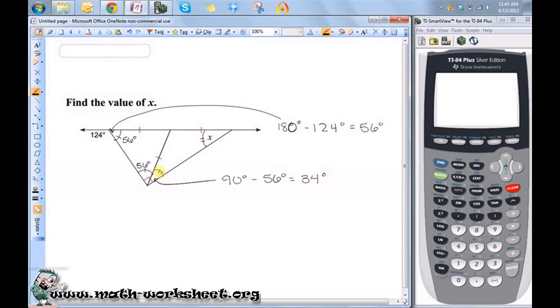Well, we said that this angle and this angle are equal in measure, because this is an isosceles triangle. If this one's equal to 34 degrees, then this one has to equal 34 degrees, so x is equal to 34 degrees.